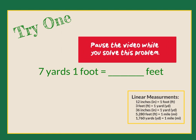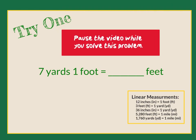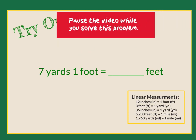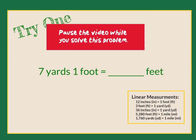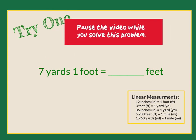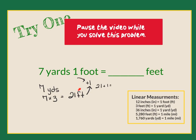Now it's time for you to solve the problem again, so pause the video while you solve the problem and then unpause it to check your answer. I had 7 yards and I needed to change that into feet. Since there are 3 feet in each yard, I multiplied 7 times 3, giving me 21. But then I had to add back in the 1 foot I had left over, giving me a grand total of 22 feet.